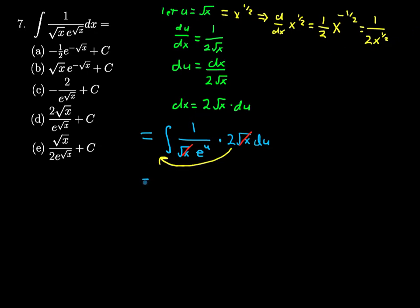So, this will be equal to 2 times the indefinite integral of 1 divided by e to the u du. And we might not see it here, but 1 divided by e to the u is e to the negative u power. So, let's do that. 2 times the integral of e to the negative u du.